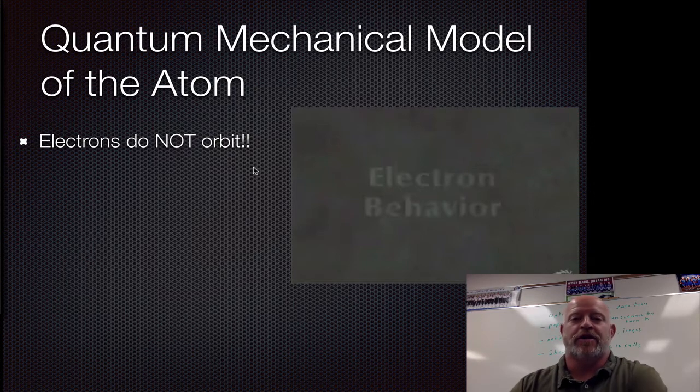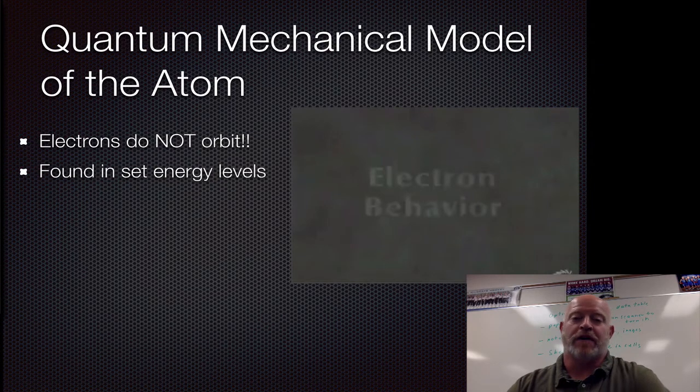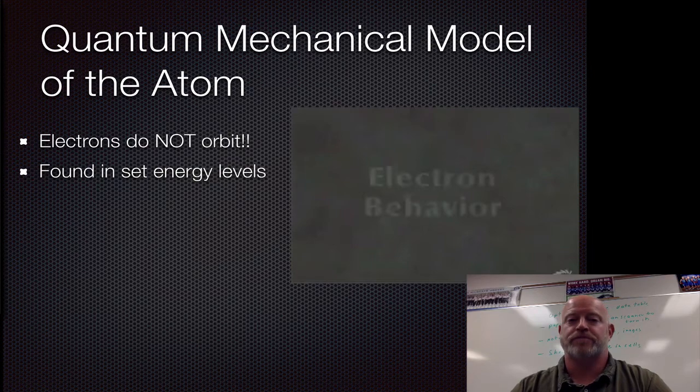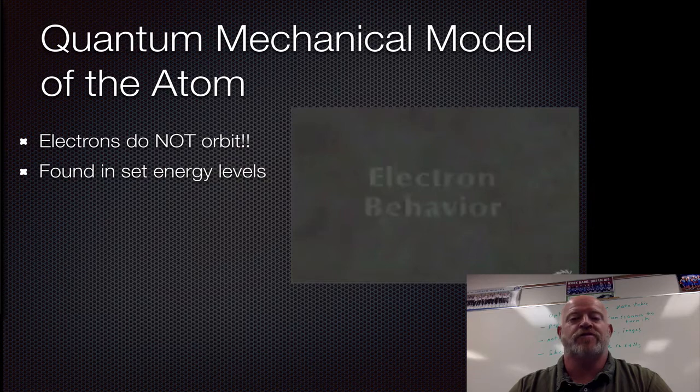So get that out of your brains - in our current model, no orbits. Now something that holds true that is the same as the planetary model: we still agree that electrons sit in very discrete amounts of energy or these set energy levels.